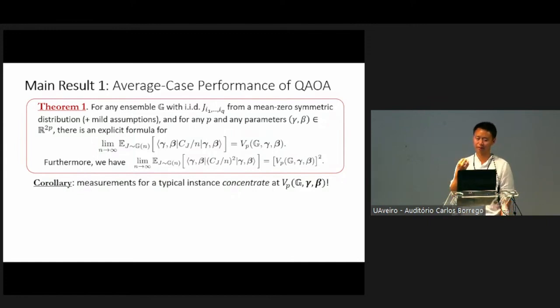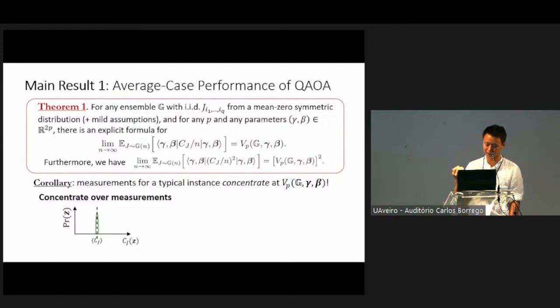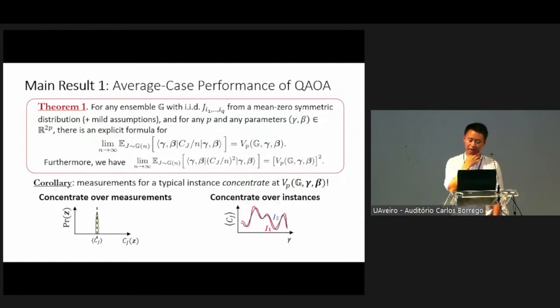Furthermore, you can also consider evaluating the second moment of this expectation of cost function in the quantum state. It turns out that is equal exactly to the expectation squared. That actually gives a very interesting corollary, which is that the measurement outcomes of the QAOA applied to a typical instance drawn from these random ensembles concentrate at the expected value. This is actually a very strong concentration result in the sense that we have two types of concentration. One is the concentration of the measurement.